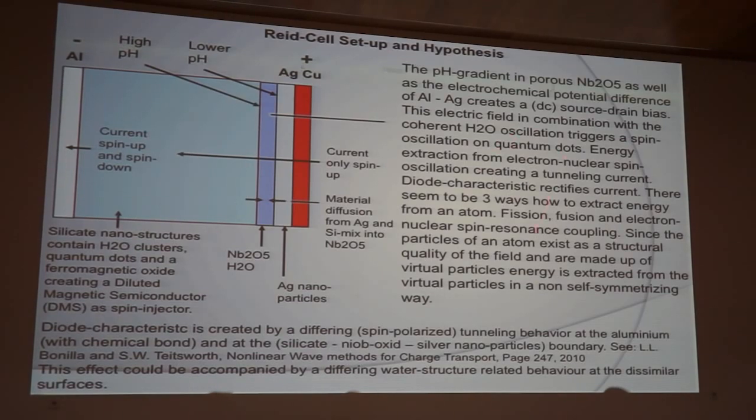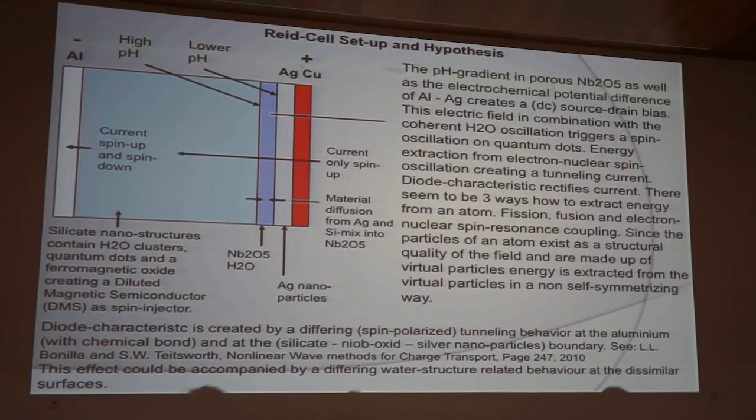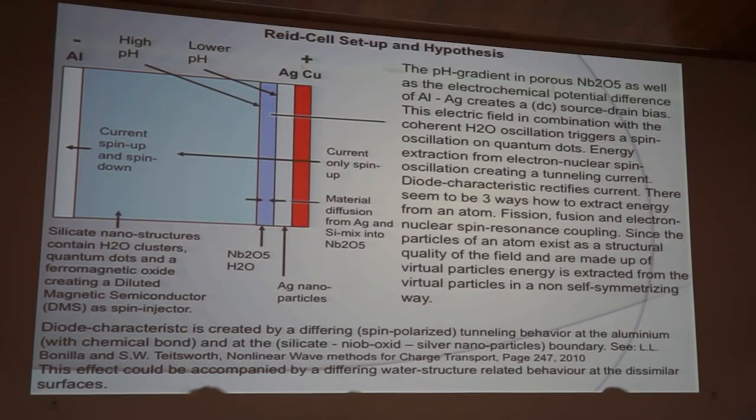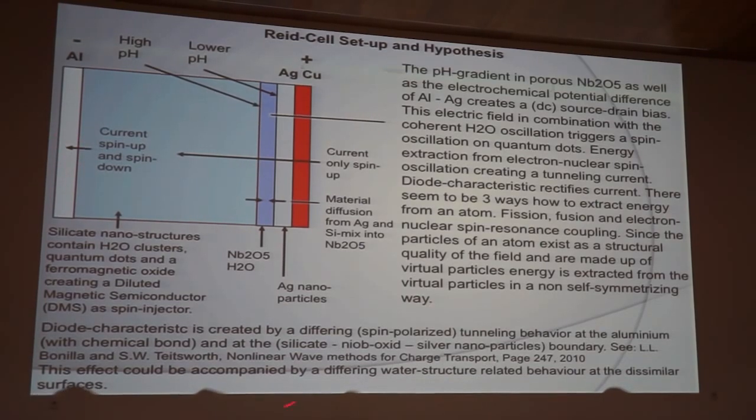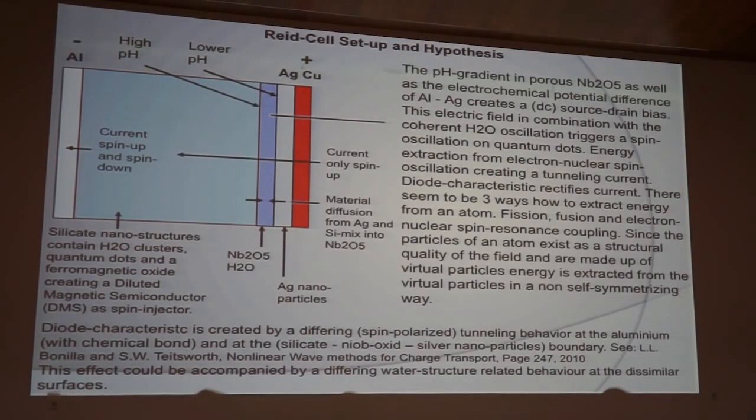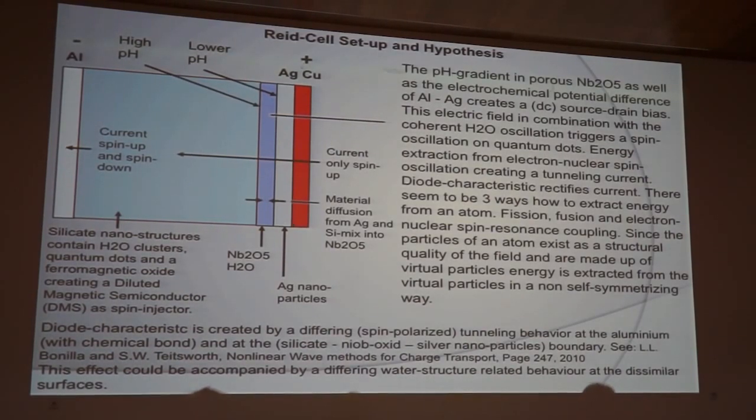Now this relates to the charge separation itself but it still does not determine where the electrons are moving. The electrons have to be separated into a particular direction. That is done by the diode characteristic which is created by a differing spin polarized tunneling behavior at the aluminium with the chemical bond that's on the left side here and at the silicate neop oxide silver nanoparticles boundary. And this effect could be accompanied by a differing water structure related behavior at the dissimilar surfaces.